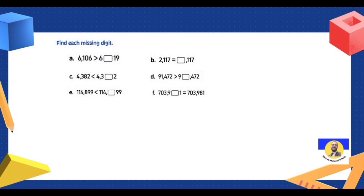Find each missing digit. Letter A: you want to make a number smaller than this number — if the problem has 100, you need a number smaller than 100, so we write 0. Next: we want the two numbers equal, so put 2 here for the thousands — same as 2. Then 4 same as 4; 3 same as 3. For the tens digit, we want this number greater than 8, so we write 9.